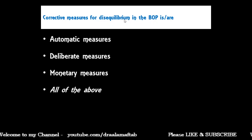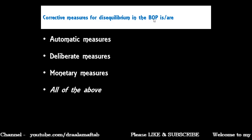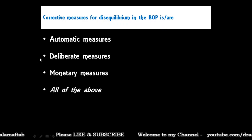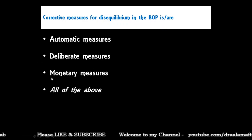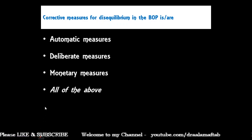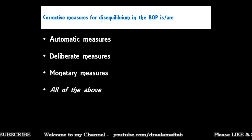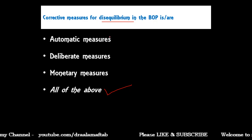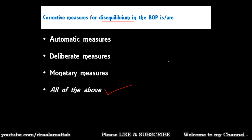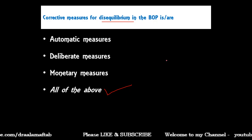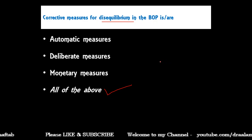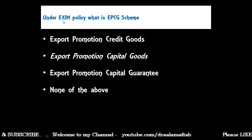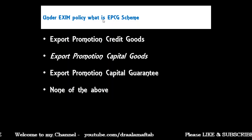Next: corrective measures for disequilibrium in the balance of payment are — automatic measures, deliberate measures, monetary measures, or all of the above? When there is disequilibrium in the balance of payment, all of the above corrective measures can be taken to solve the disequilibrium.